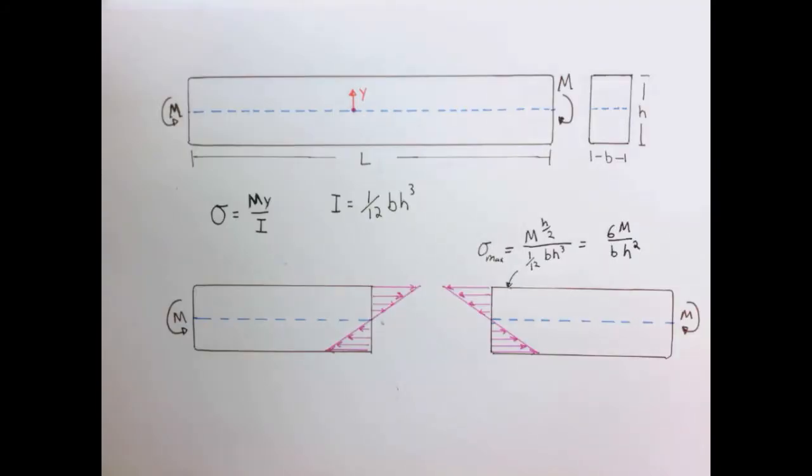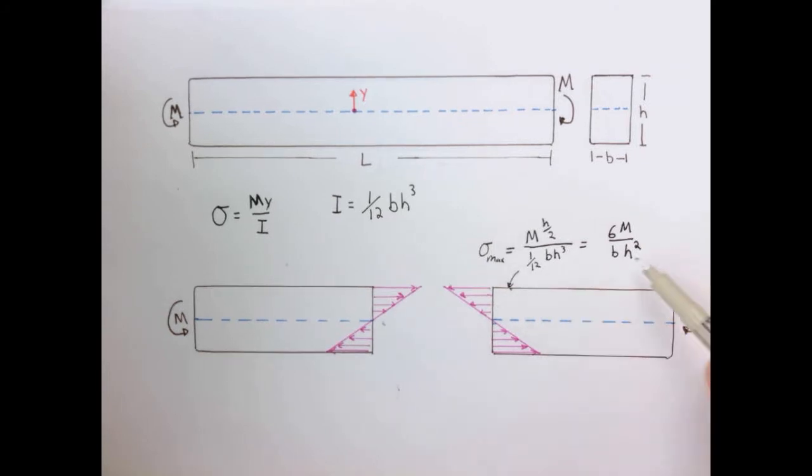An interesting question to ask is what's the maximum tensile stress in the beam, which we can easily find by substituting this location at H over 2 into our formula, and we get that the maximum stress depends very strongly on the height of the beam as a square power, meaning if we halve the thickness the maximum stress goes up by 4. And this ought to be intuitive that a thinner beam is going to have higher stresses in bending.